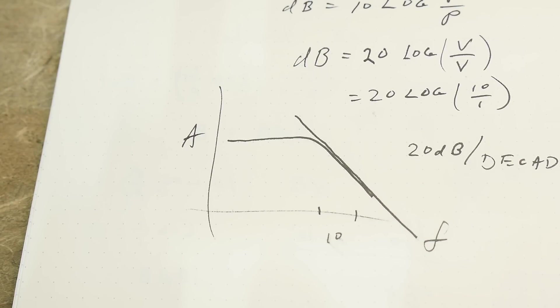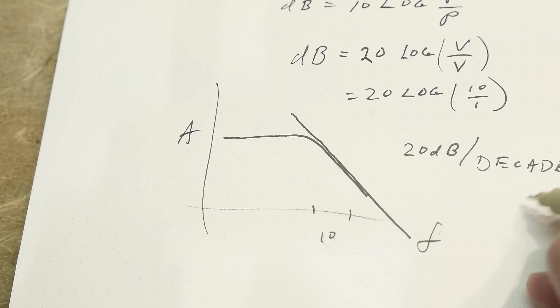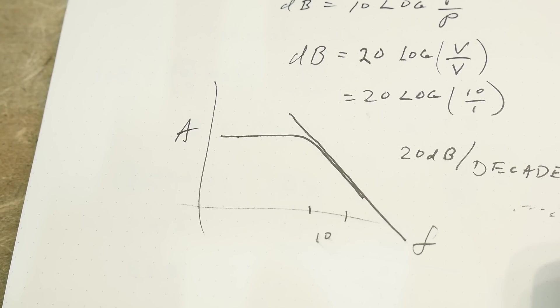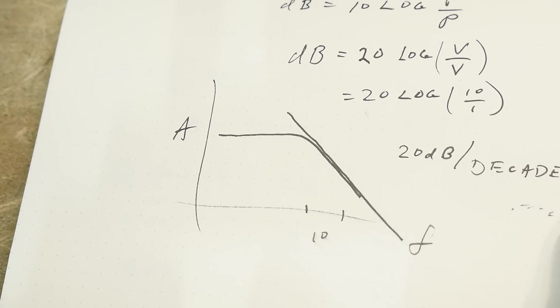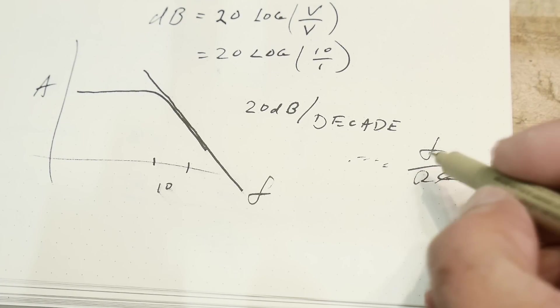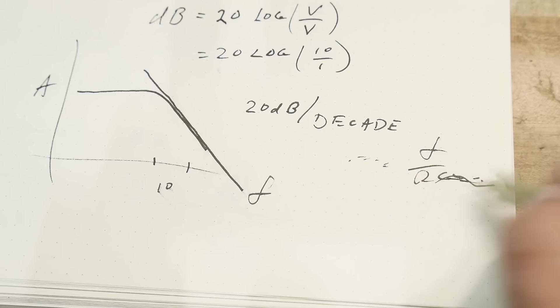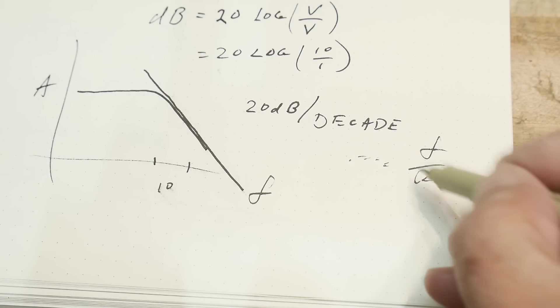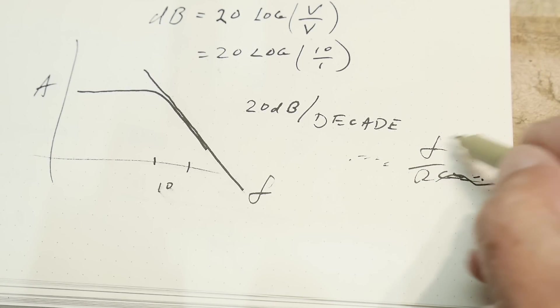Because it's 10 times the frequency. If your formula is f over R times C plus some constants, it doesn't really matter what everything else is. If there's an f in the equation, that means that this thing changes with f, and if f goes up by 10, this thing goes up by 10.